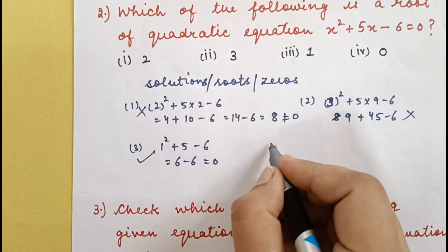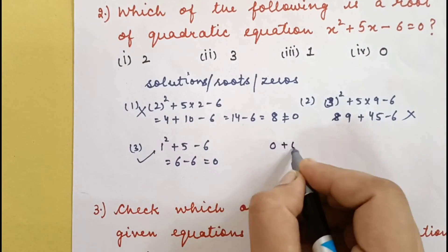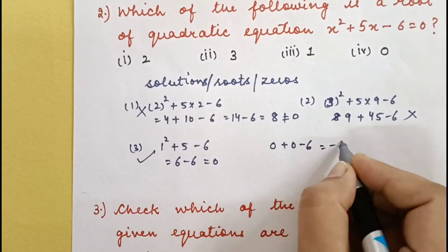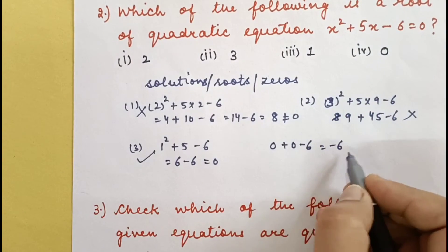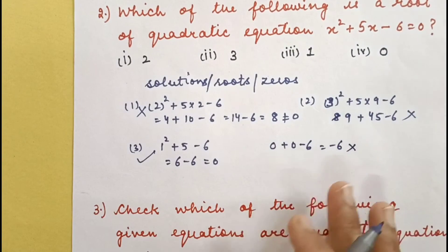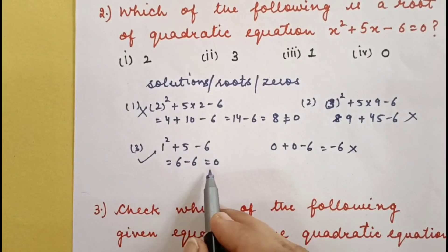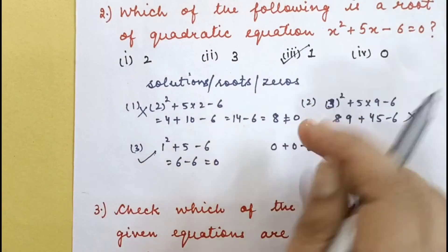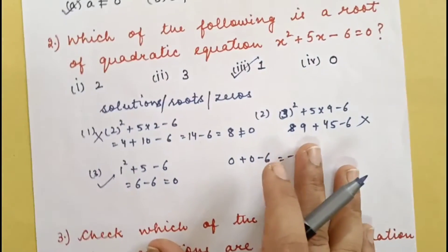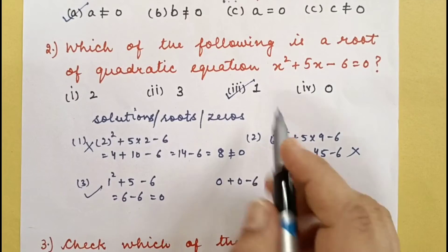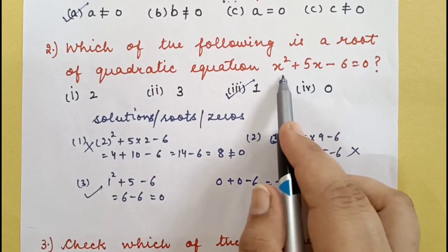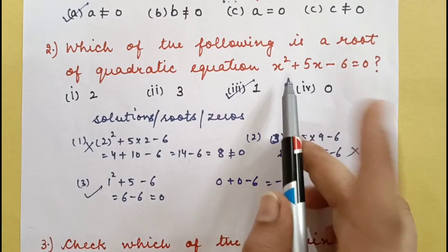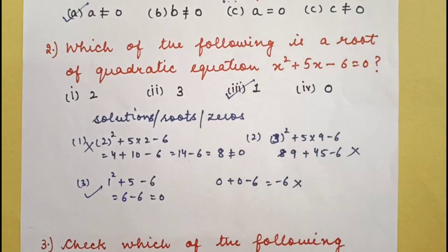Now put x = 0: 0² + 5×0 − 6 = −6, which is not equal to 0. So that doesn't satisfy. Left-hand side equals right-hand side only in the case of x = 1. That means x = 1 is the root of the equation.